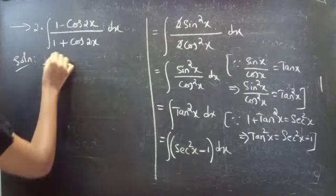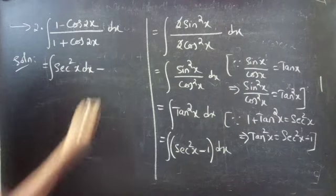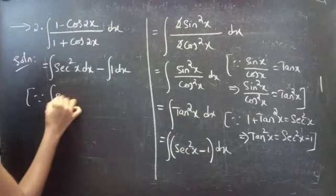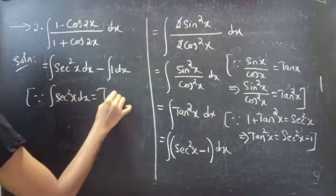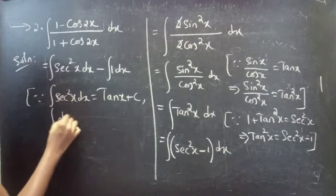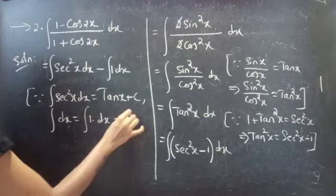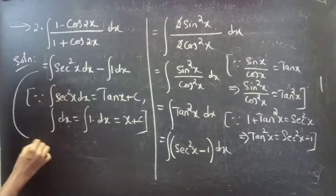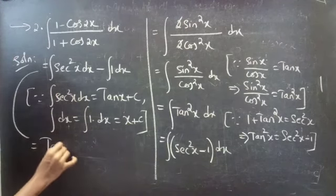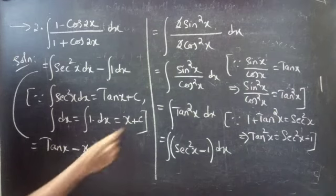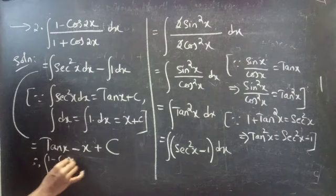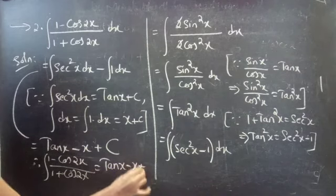This equals the integral of sec²x dx minus the integral of 1 dx. Since the integral of sec²x dx = tan x + C, and the integral of dx = x + C, combining with one constant gives tan x - x + C. Therefore, the integral of (1 - cos 2x)/(1 + cos 2x) dx equals tan x - x + C.